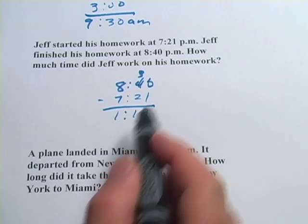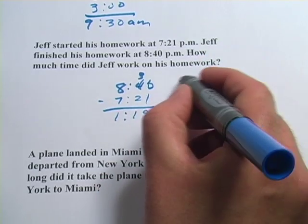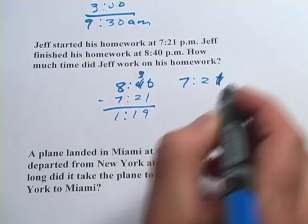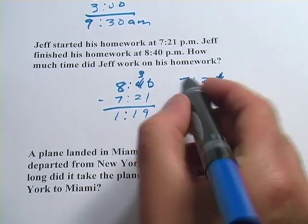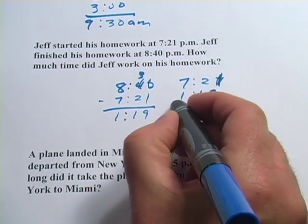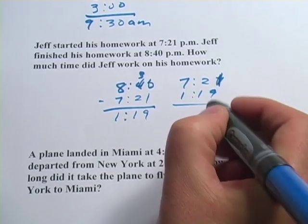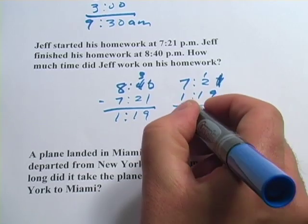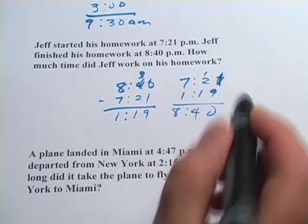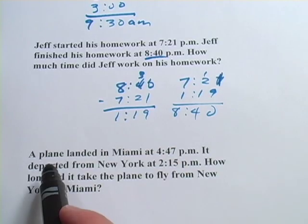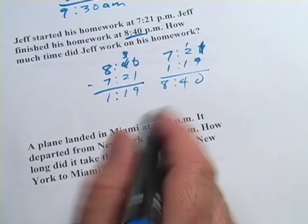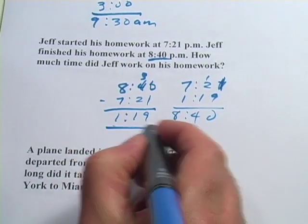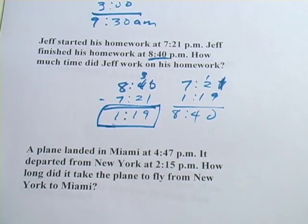And we could check that. We could start with the time he started — 7:21 — and add an hour and 19 that we think he spent on his homework. And we get 8:40, which is exactly the time he finished. So that checks out. The amount of time he spent on his homework was an hour and 19 minutes.